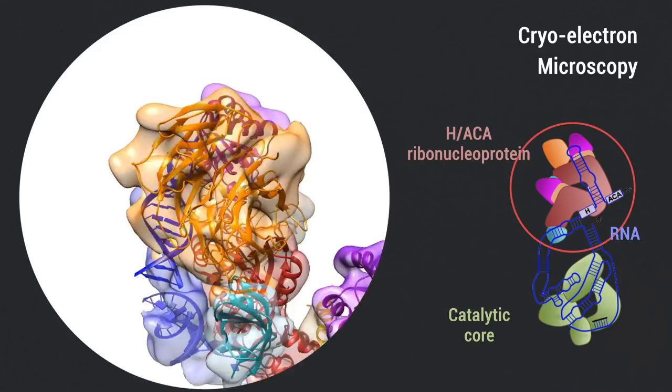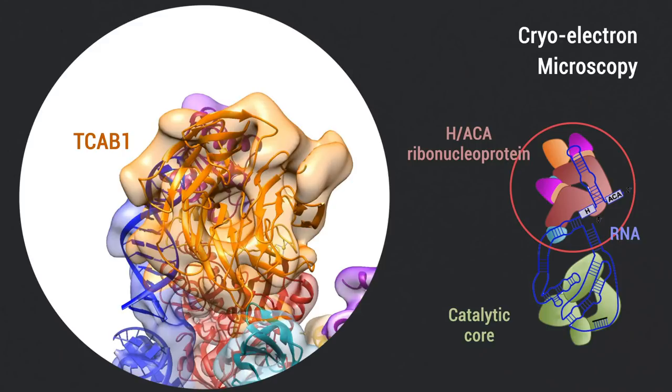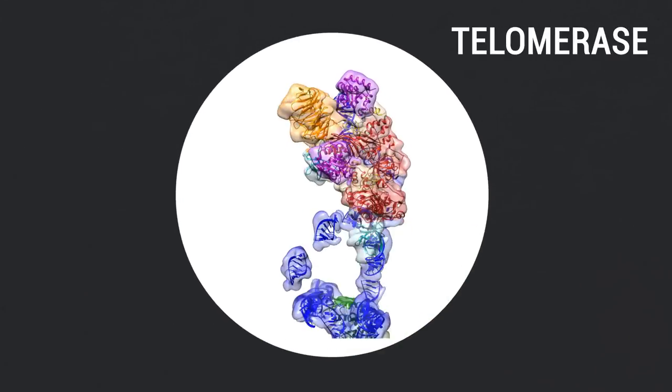The H-ACA-RNP lobe comprises two sets of heterotetrameric H-ACA proteins and one Cajal body protein, TCAB1, representing a pioneering structure of a large eukaryotic family of ribosome and spliceosome biogenesis factors.